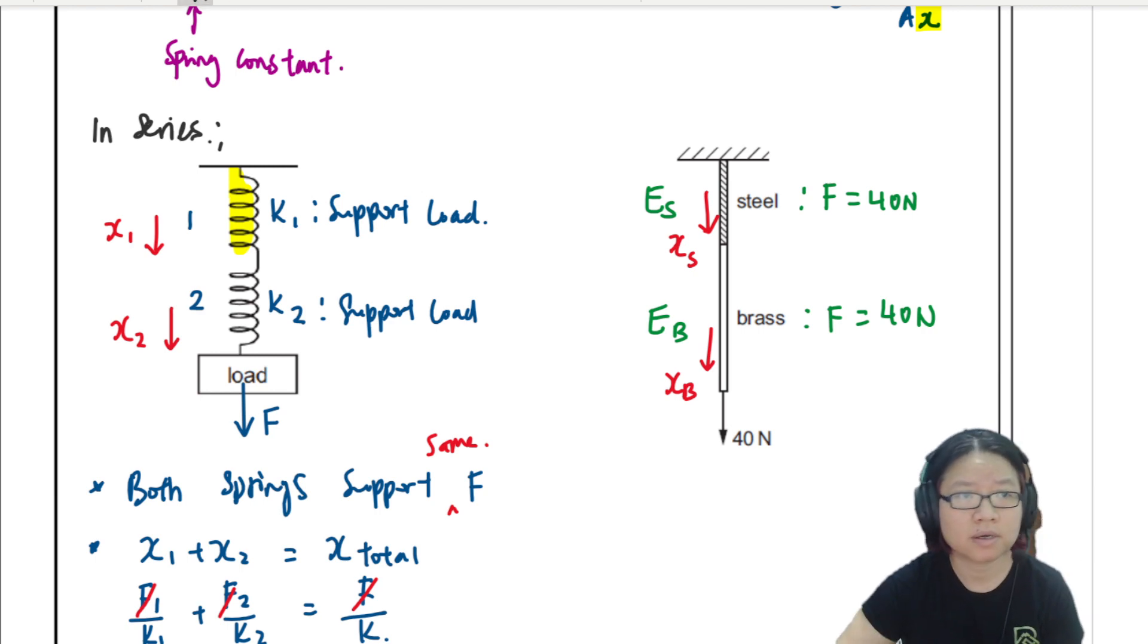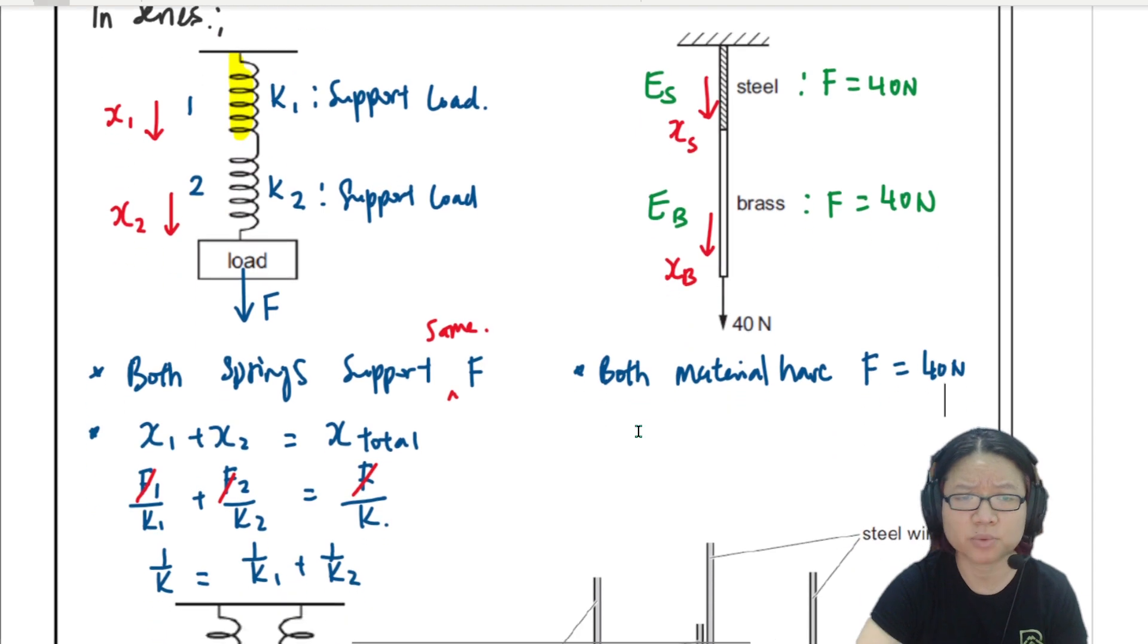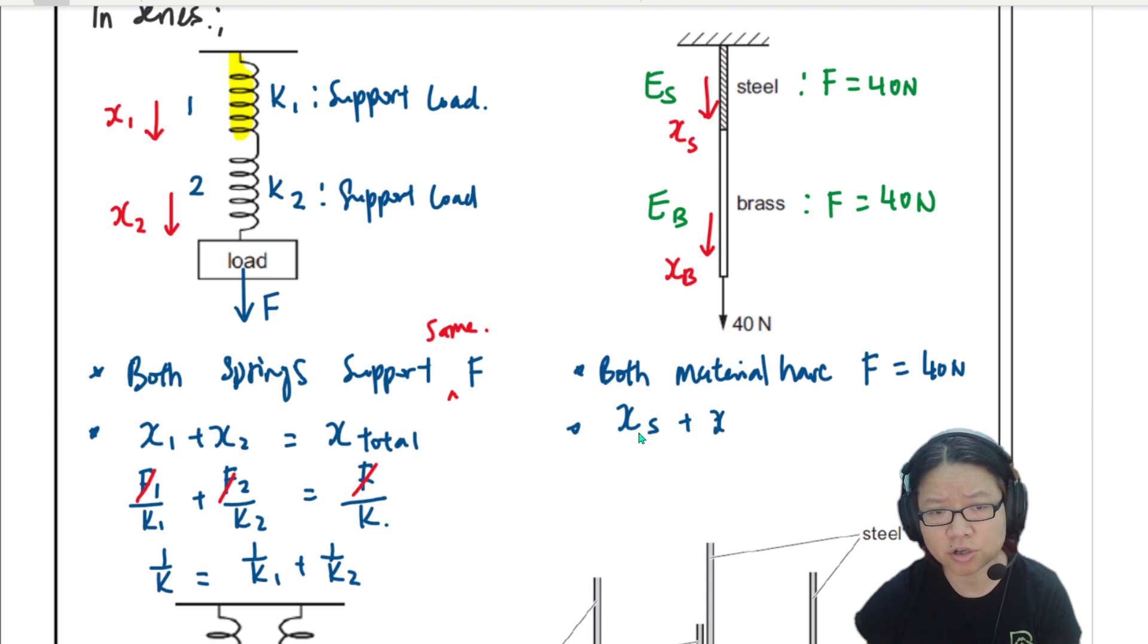So we are still using the same ideas. Number one, both rods or both materials have force or the tension is 40 newton. And the second one would be the extension of steel plus the extension of brass will be equal to the total extension.